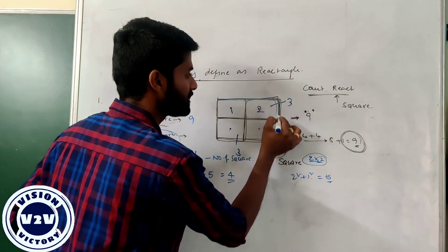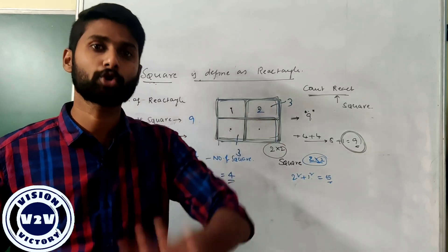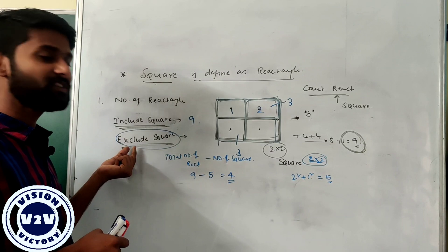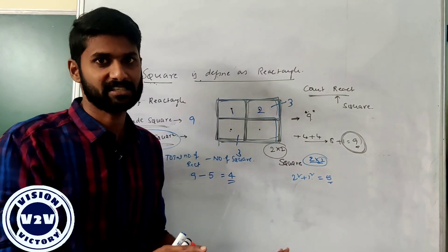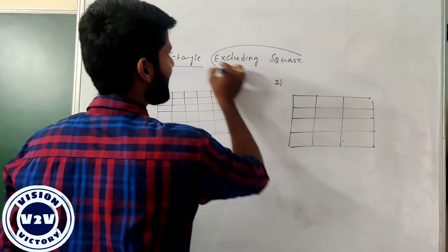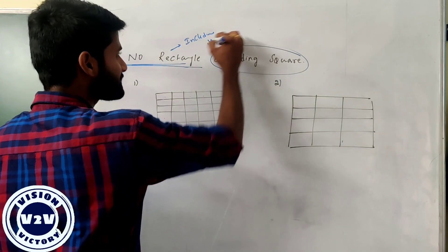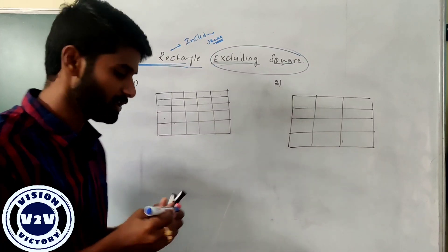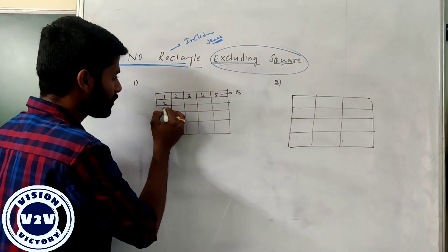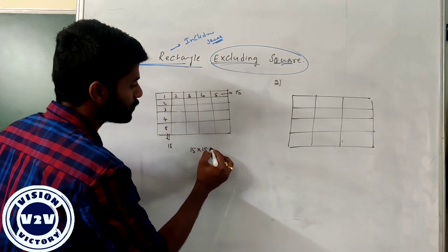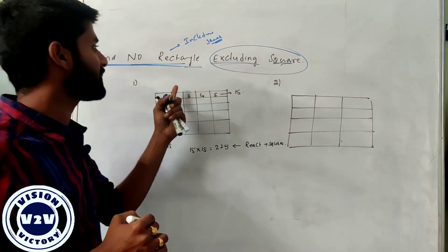I will show those 4 non-square rectangles: this is 1, this is 2, this is 3, and this is 4. If a question asks to count rectangles, it definitely means including squares. If you want the detailed answer, they will mention excluding squares. For the 5×5 figure: 1, 2, 3, 4, 5 horizontally and 1, 2, 3, 4, 5 vertically — 15 into 15: the total number is 225. It is a combination of rectangles plus squares. If the question asks for number of rectangles for this figure, the answer is equal to 225.